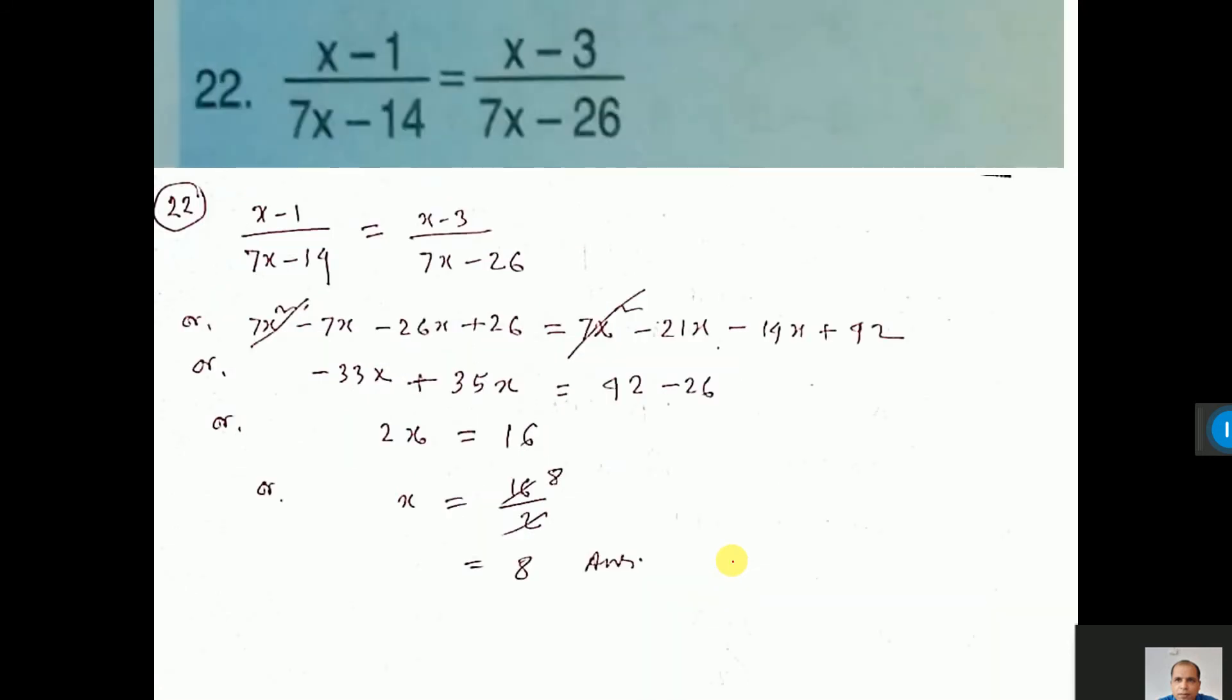Now this one. Do cross multiplication. That means this into this equal to this into this. After doing, you see 7x square, both sides, same sign, so you cut.